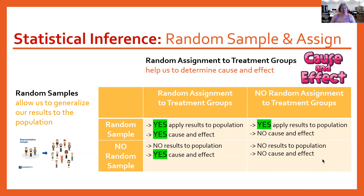The bottom right box is the worst box to be in — no random sample and no random assignment to treatment groups. The only reasons someone might be there are either they don't know statistics and are doing bad research, or they're doing a very small pilot study to get a handle on what they want to do before spending the money on a proper random sample and random assignment. Otherwise, people really should not be in that bottom right box.